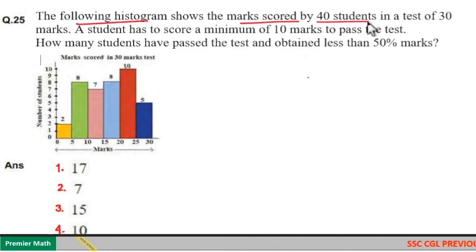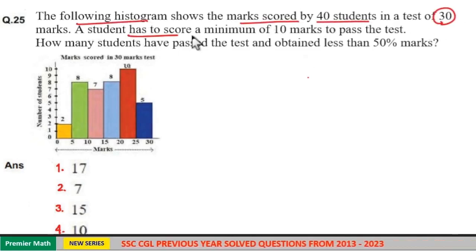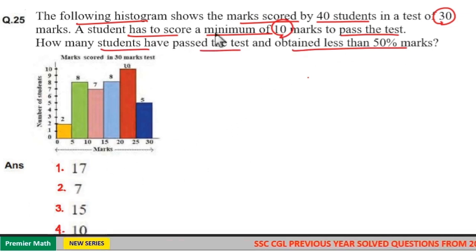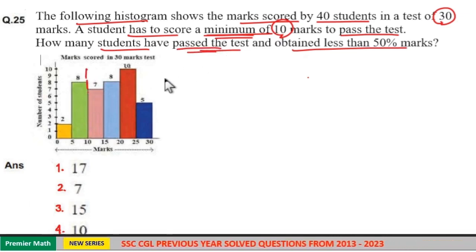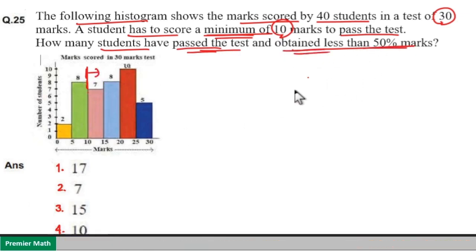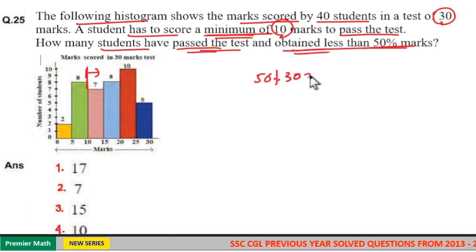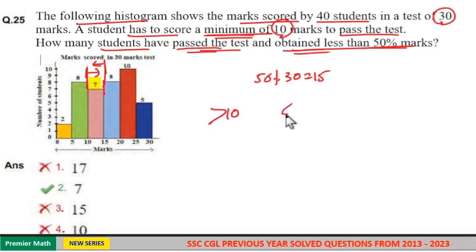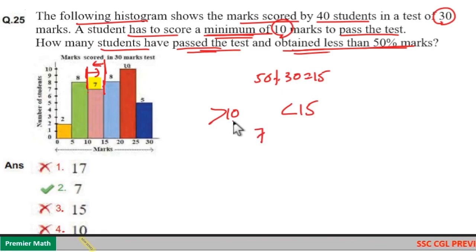The histogram shows marks scored by 40 students in a test of 30 marks. A student needs minimum 10 marks to pass. How many students passed the test and obtained less than 50 percentage marks? 50 percentage of 30 is 15. So we need students who scored greater than 10 but less than 15 marks. From the histogram, between these two values there are total 7 students. Option 2 is your answer.